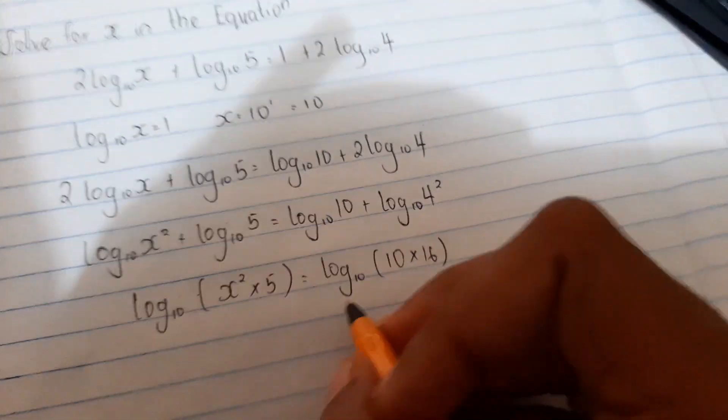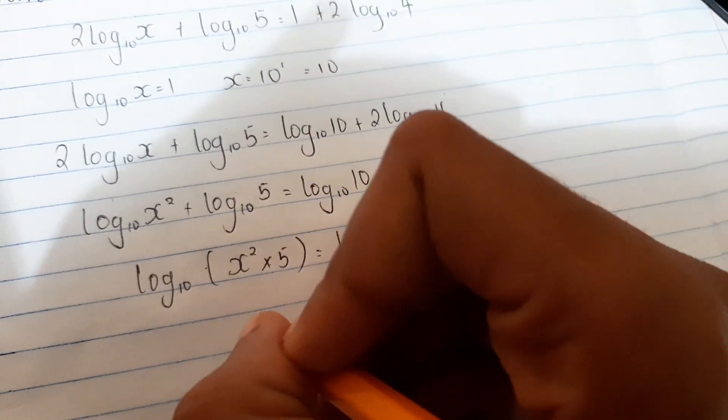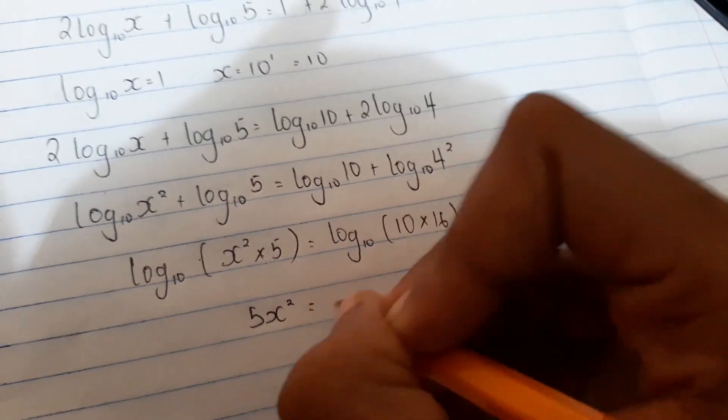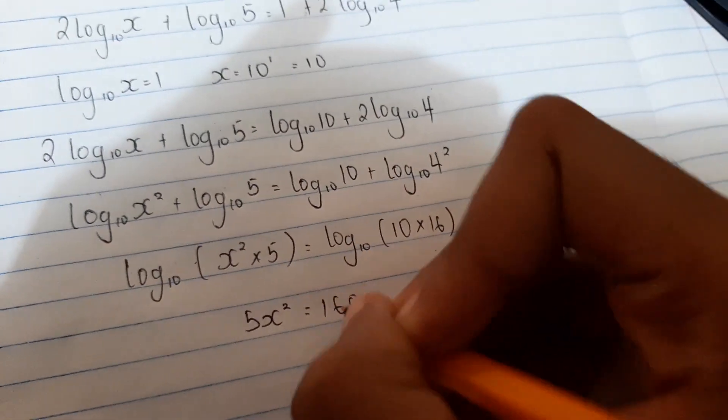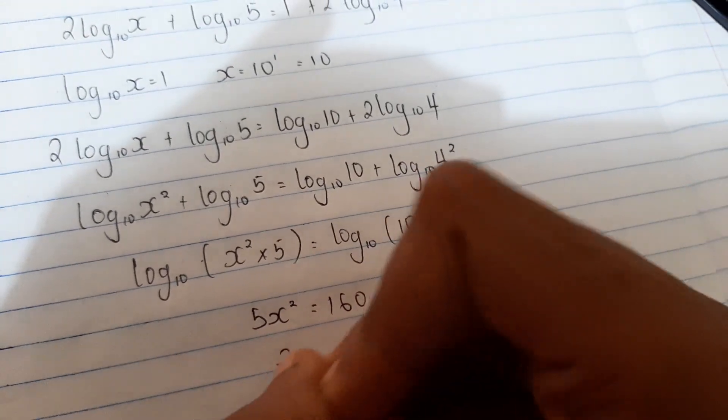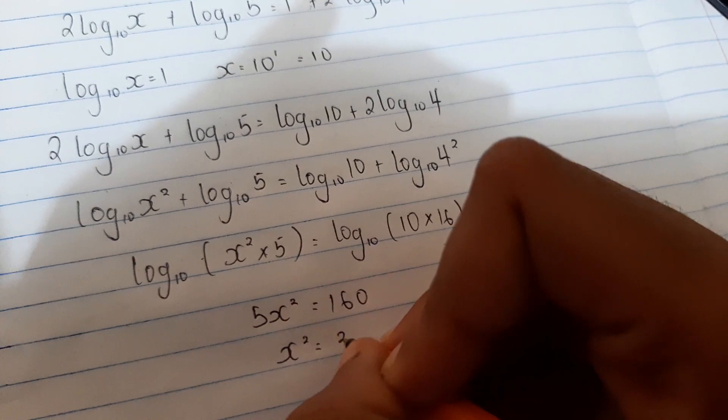The logs cancel out. We have 5 times x squared equals 160. So 5x squared equals 160. Divide by 5 on both sides, and x squared equals 32.